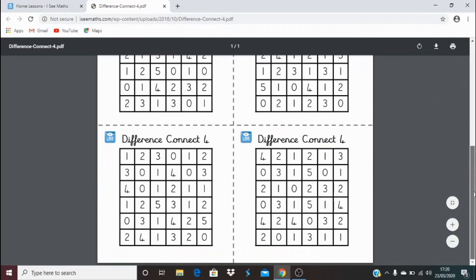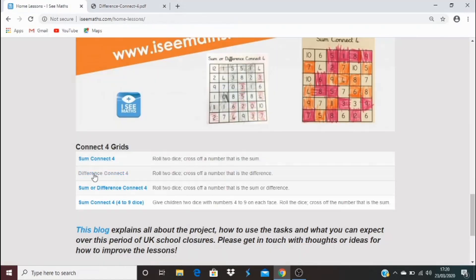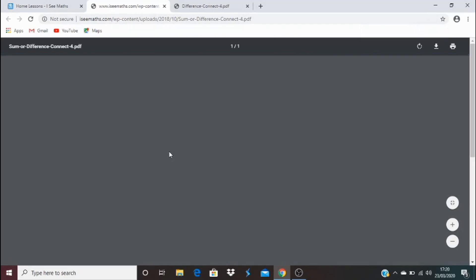There's six grids per page so if you print off one copy of this page here you'll get six grids that you can use to play and obviously the links to all the other games are there as well. So let's say Sum or Difference Connect Four, click on the link there and it'll open up the grids for that game.